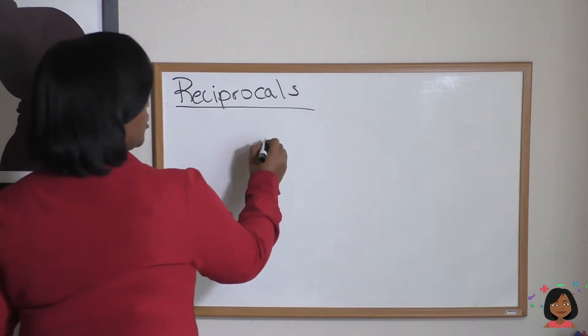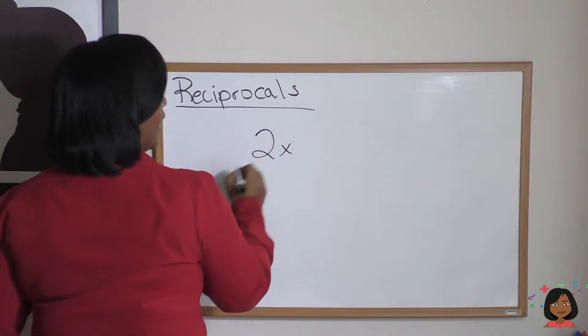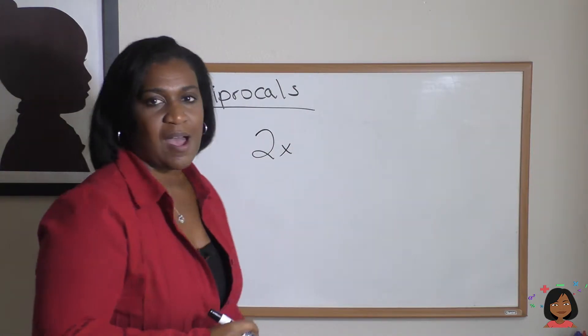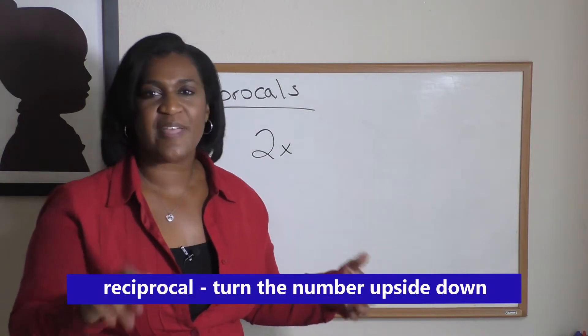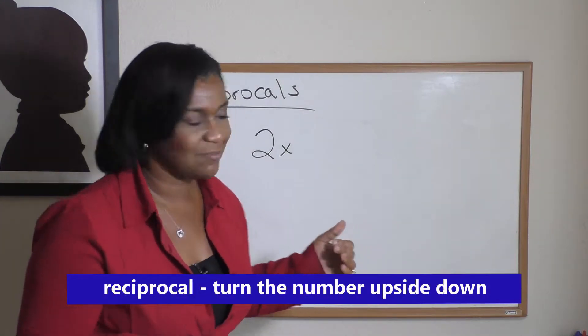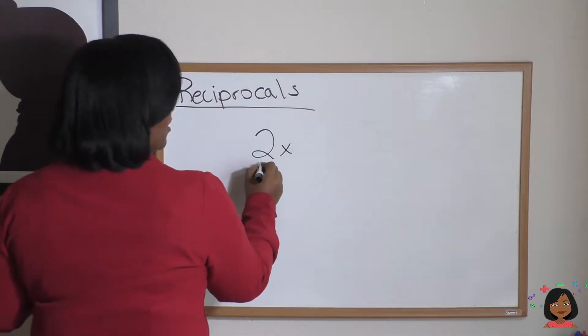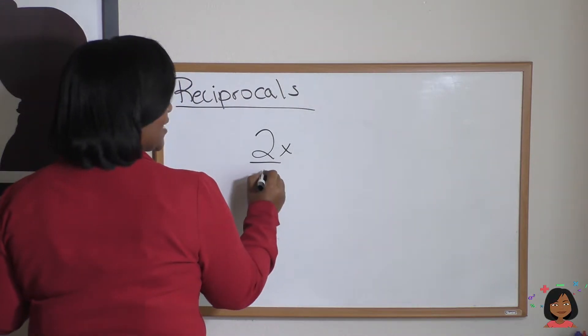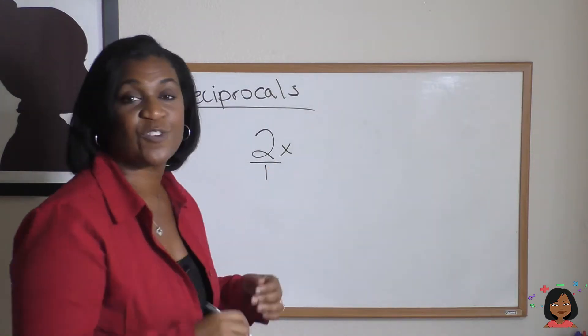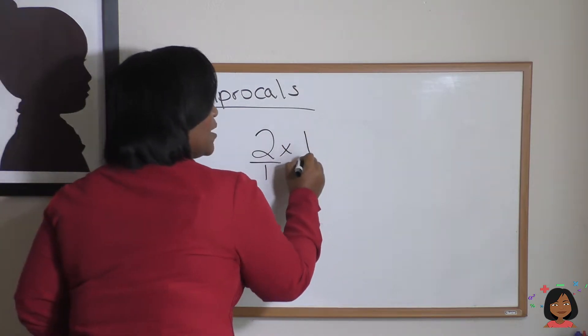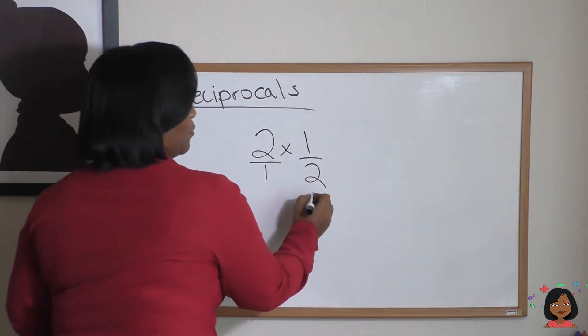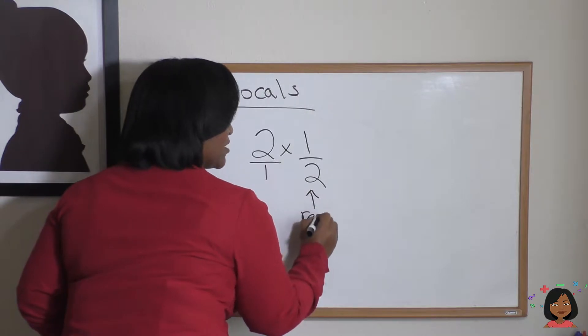Let's say I had the number 2 and I'm asking you for the reciprocal. Reciprocal means turn that number upside down. The number 2 really is the same thing as saying 2/1, isn't it? So if I said the reciprocal, turn it upside down, it's the same thing as 1/2. That is the reciprocal.